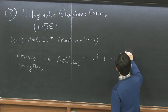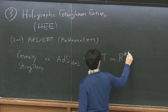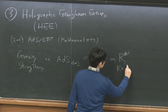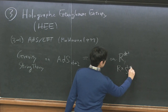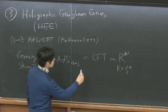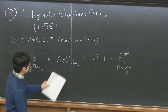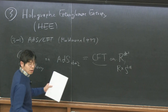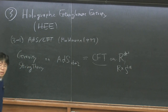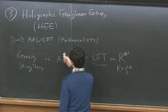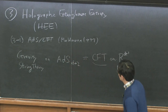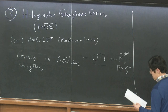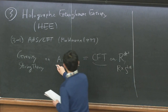A D+1 dimensional conformal field theory living on R^{D+1} — or sometimes R times S^D — is dual to gravity in D+2 dimensions, one dimension higher, because of the holographic principle. This gravity theory has a negative cosmological constant, namely anti-de Sitter space. This is the basic claim of ADS-CFT.